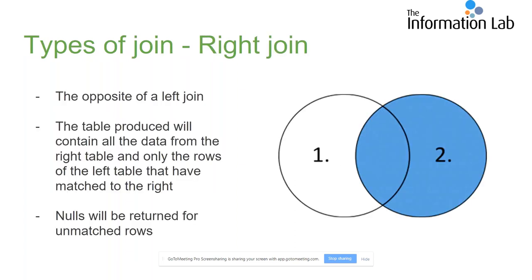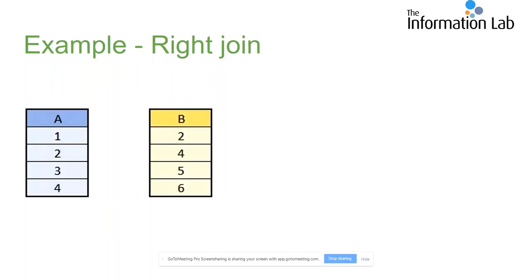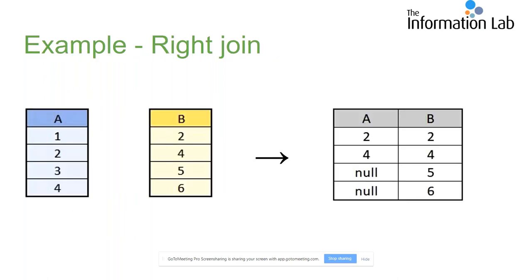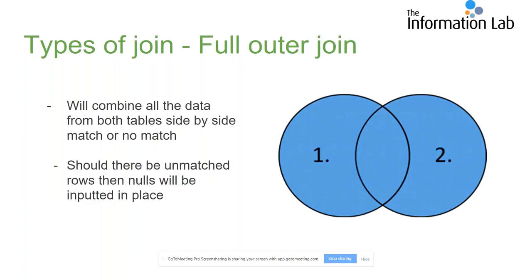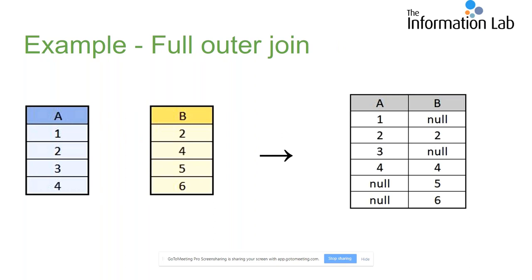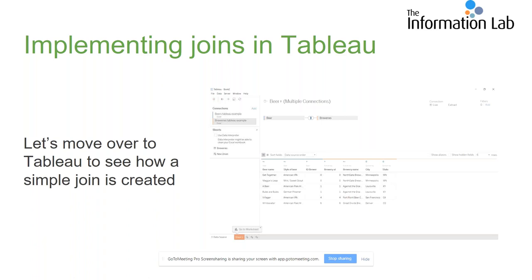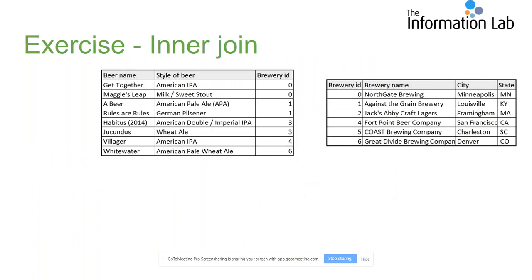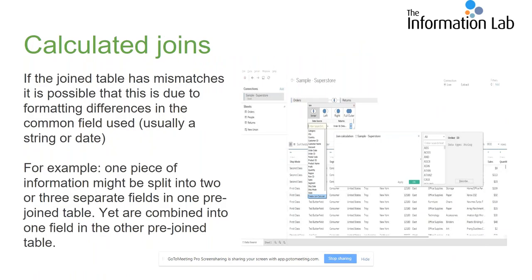The full outer join means you get everything - all data regardless of whether it matches or not. Additionally, Tableau handles calculated joins well - if you can't match directly to a field within Tableau, you can use calculated joins to link data sources.